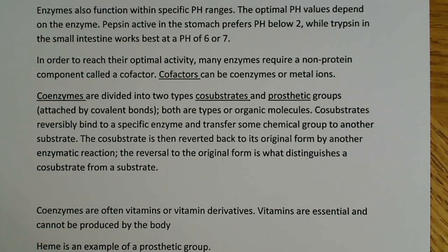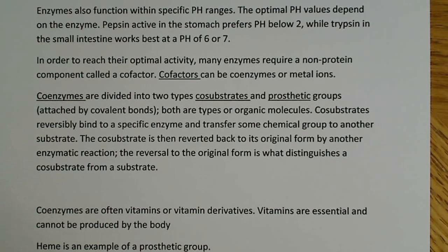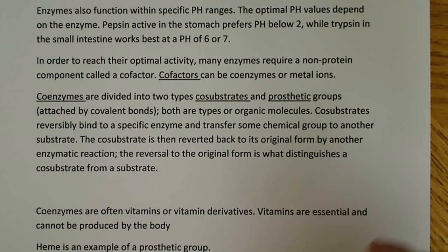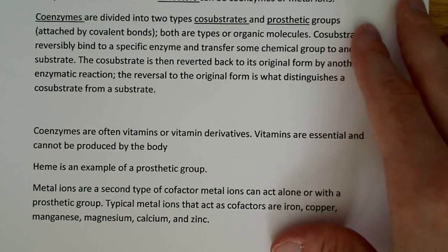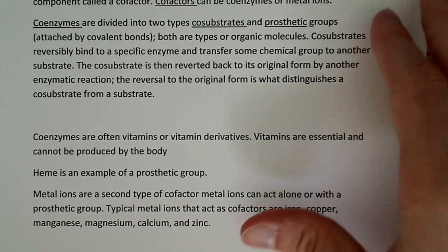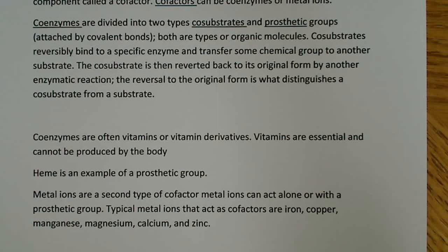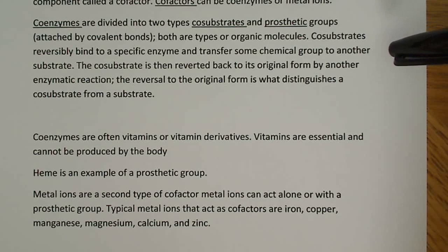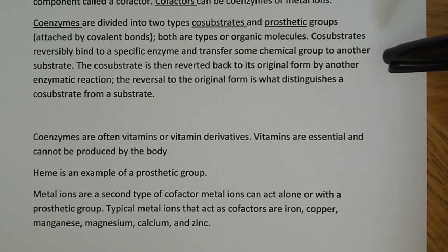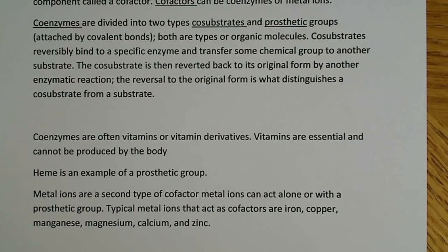In order to reach optimal activity, many enzymes require a non-protein component called a cofactor. Cofactors can be coenzymes or metal ions. Coenzymes are divided into two types: co-substrates and prosthetic groups, which are attached by covalent bonds — unlike allosteric effectors, which are attached by weak intermolecular forces like hydrogen bonds. Both are types of organic molecules. Co-substrates reversibly bind to a specific enzyme and transfer some chemical group to another substrate, and the co-substrate is then reverted back to its original form by another enzymatic reaction.